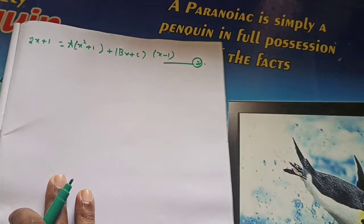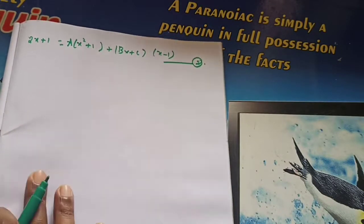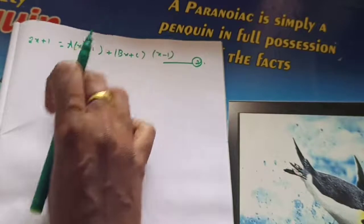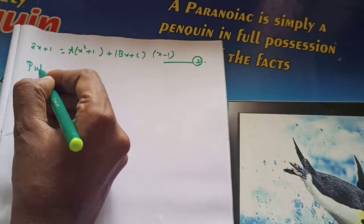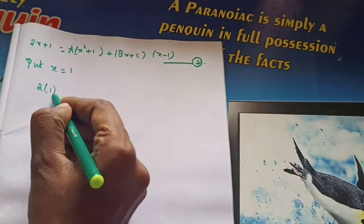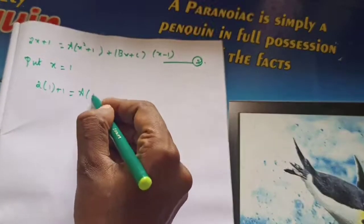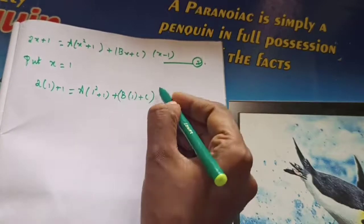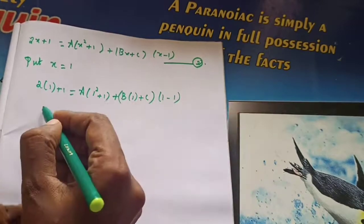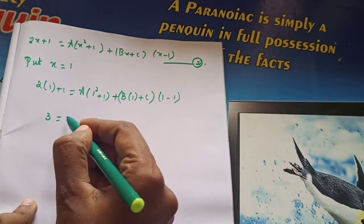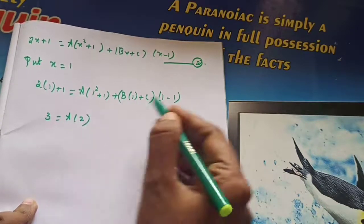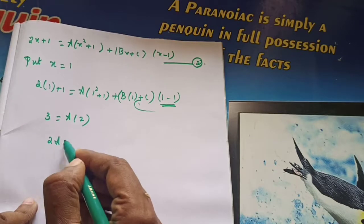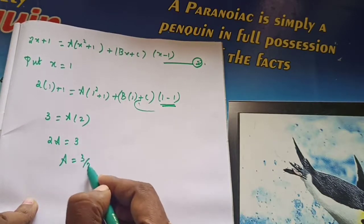Equation number 2: everything is same procedure — we make any term zero. If I substitute x equals 1, the bx plus c term becomes zero. So put x equal to 1: 2 into 1 plus 1 equals A into 1 squared plus 1, plus b into 1 plus c into 1 minus 1. That gives 3 equals A into 2, and this whole last term becomes 0. So 2A equals 3, therefore A equals 3 by 2.